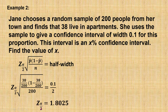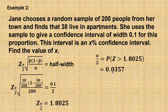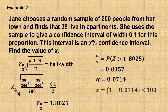When I calculate, I find that z alpha over 2 is 1.8025, which means alpha over 2 equals P(Z > 1.8025). From the normal table, this is 0.0357. Alpha is 0.0357 times 2, which is 0.0714. Therefore, x is the confidence level, which is (1 minus alpha) times 100, equal to 92.86%.